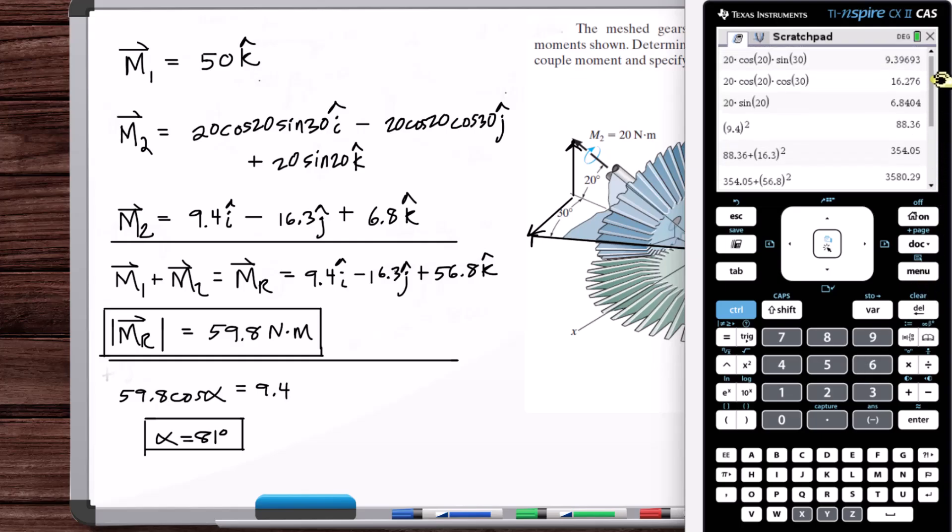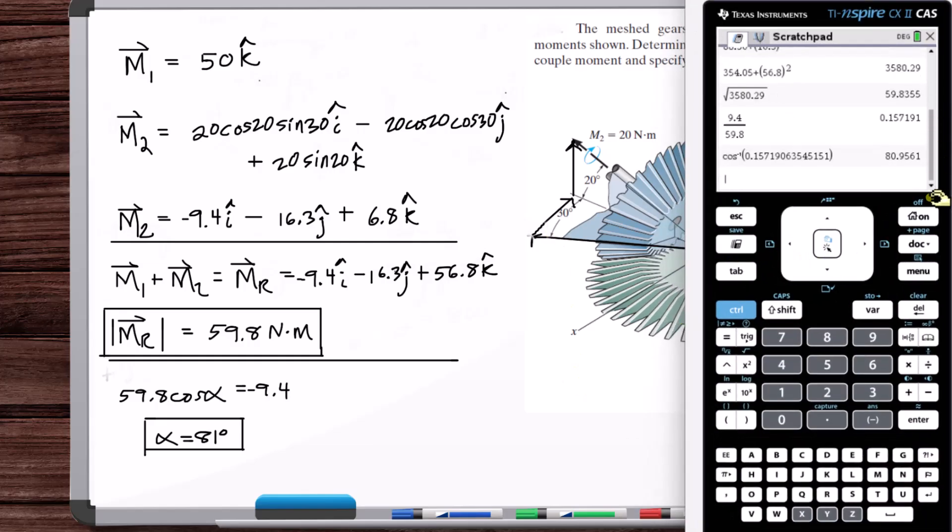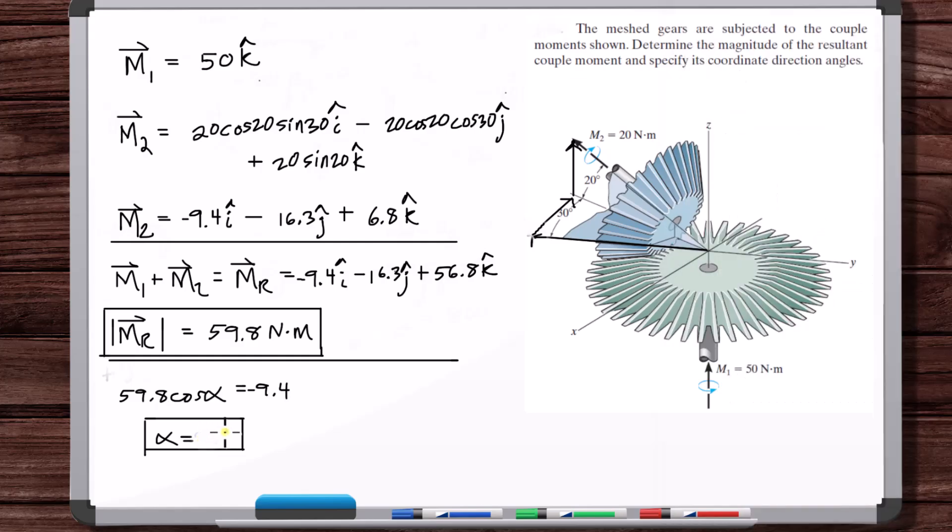And wait, hold on. Okay, I don't know what I'm thinking here. This is in this direction. This is negative. So we're in negative I hat, negative J hat, and positive K hat. So this times negative one. 99 degrees. Yeah.